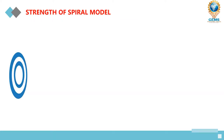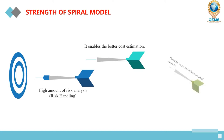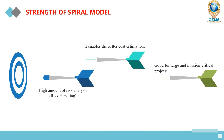The strengths of the spiral model: first, risk handling — this model has the feature to handle risk. Second, it enables better cost estimation at the beginning. Third, this model is good for large and mission-critical projects. Fourth, it allows extensive use of the prototype concept — in the first quadrant itself, a prototype is designed and shown to the customer.